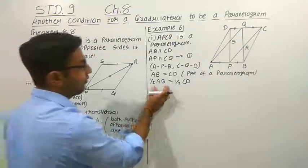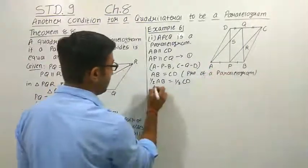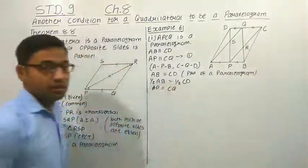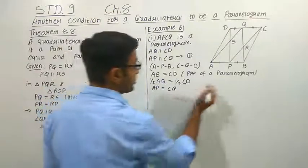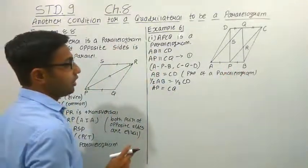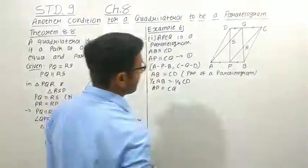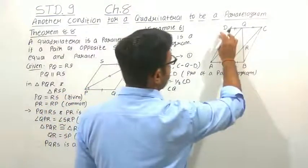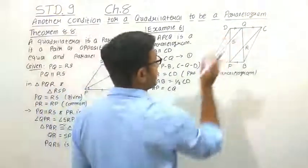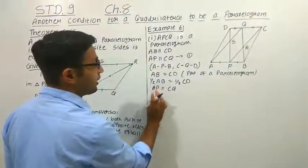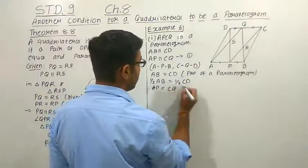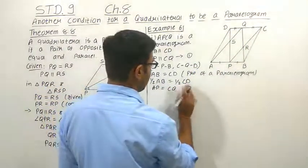One half of AB means AP, and one half of CD means CQ. Because AP and PB are both equal and both are half of AB. In the same way, DQ and CQ are also equal and both are half of CD. So half of AB we write as AP, and half of CD we write as CQ — equation number 2.